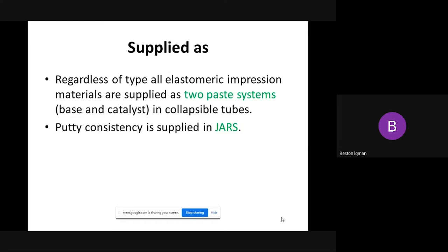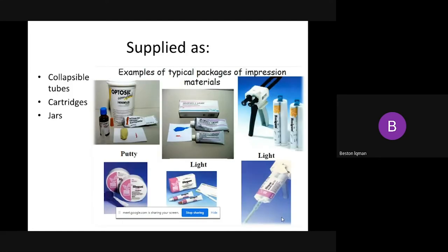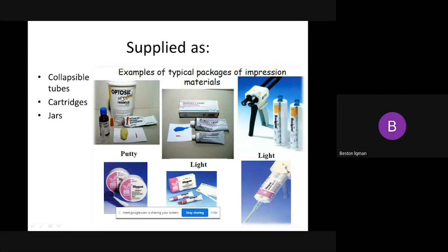All Elastomeric Impression materials are supplied in a two-paste system: Base and Catalyst — like Zinc Oxide eugenol paste. Sometimes you have putty consistency in a jar. They are available in different forms: tube, jar, and cartridge.